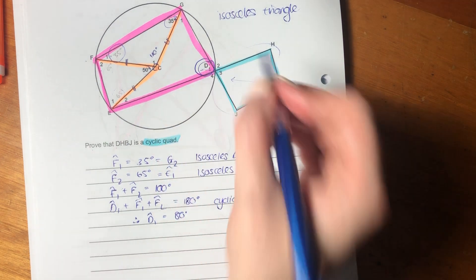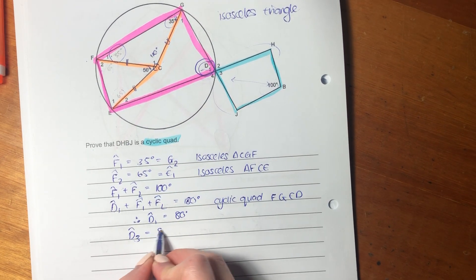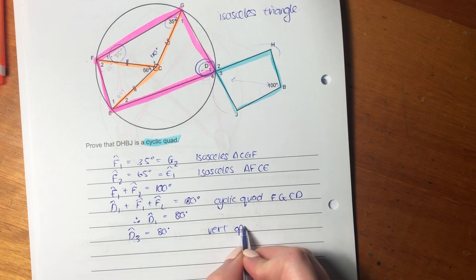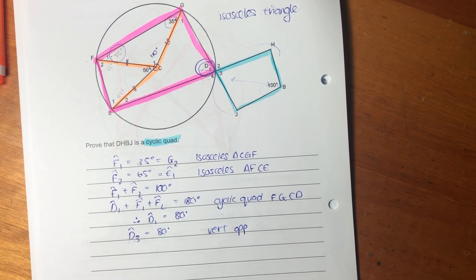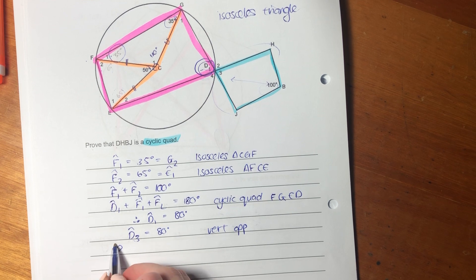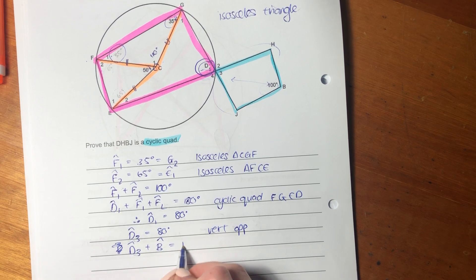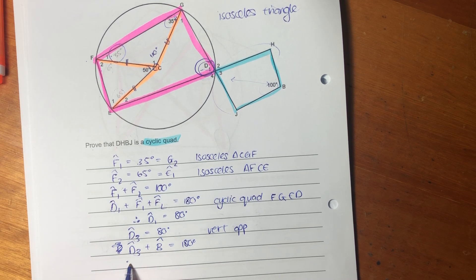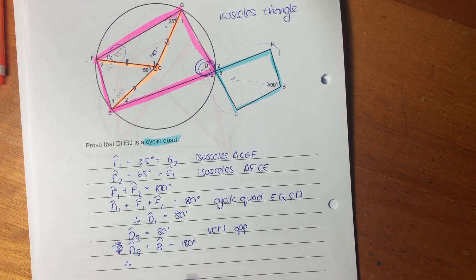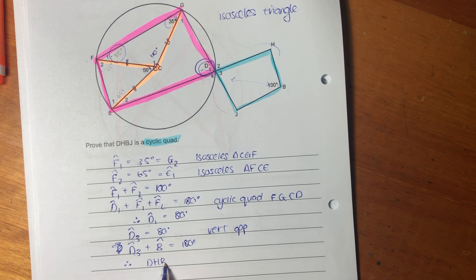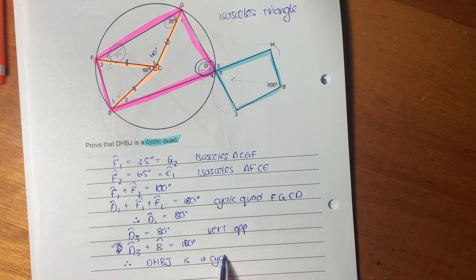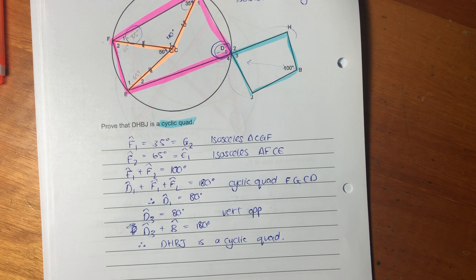So now we've worked out what D1 is. Well, now, if D1 equals 80, then D3 equals 80 because of vertically opposite. But now we know that D3 plus B equals 180. Therefore, DHBJ is a cyclic quad. So there's many ways you can do it, and you can go to the memo and look at different ways.